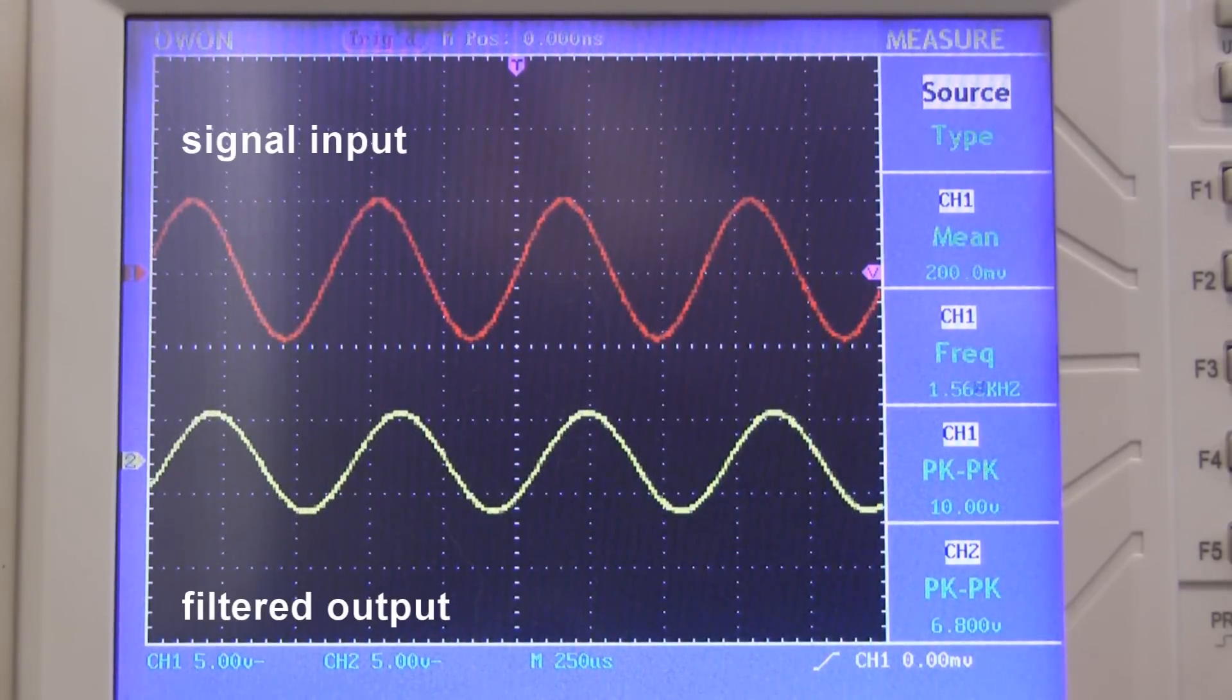And another thing you'll notice is that the two sine waves no longer line up. There's been a shift in phase. That's because the filter is introducing a small delay in the signal. Most of the time you won't care, but it is something you should be aware of.